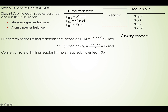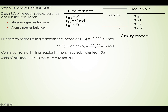Because ammonia is the limiting reactant and the problem states the conversion rate of the limiting reactant equals 0.9, and conversion rate equals moles reacted divided by moles fed, we can find the moles of ammonia reacted. Moles of ammonia reacted equals 20 moles fed times 0.9, giving 18 moles of ammonia reacted. Therefore, the moles of ammonia in the output stream equals 20 minus 18 = 2 moles of unreacted ammonia.